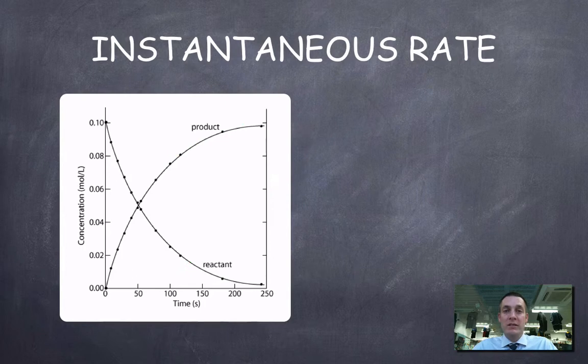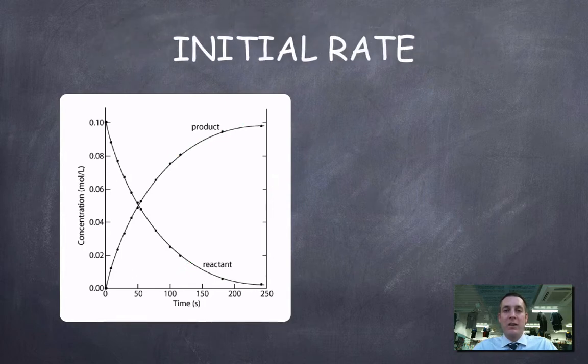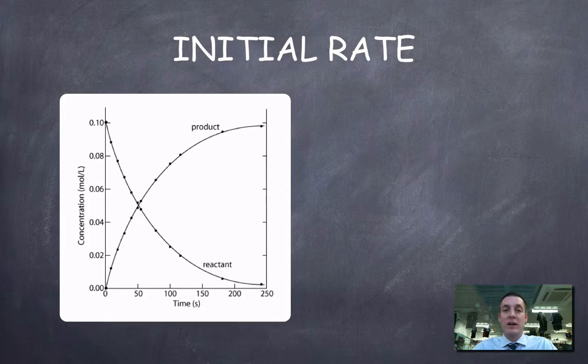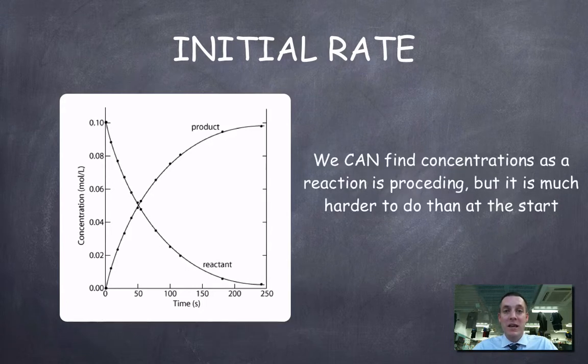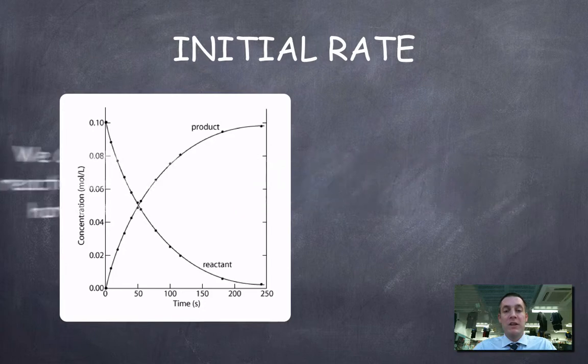Now, by far the most commonly used rate measurement is the initial rate, and that's the rate at the very beginning of an experiment, because at the beginning of an experiment we know how much stuff is there, because we put it there. In other words, we can investigate how the rate changes based on some variables that we might input, but we only really know the values of those variables at the start of an experiment.